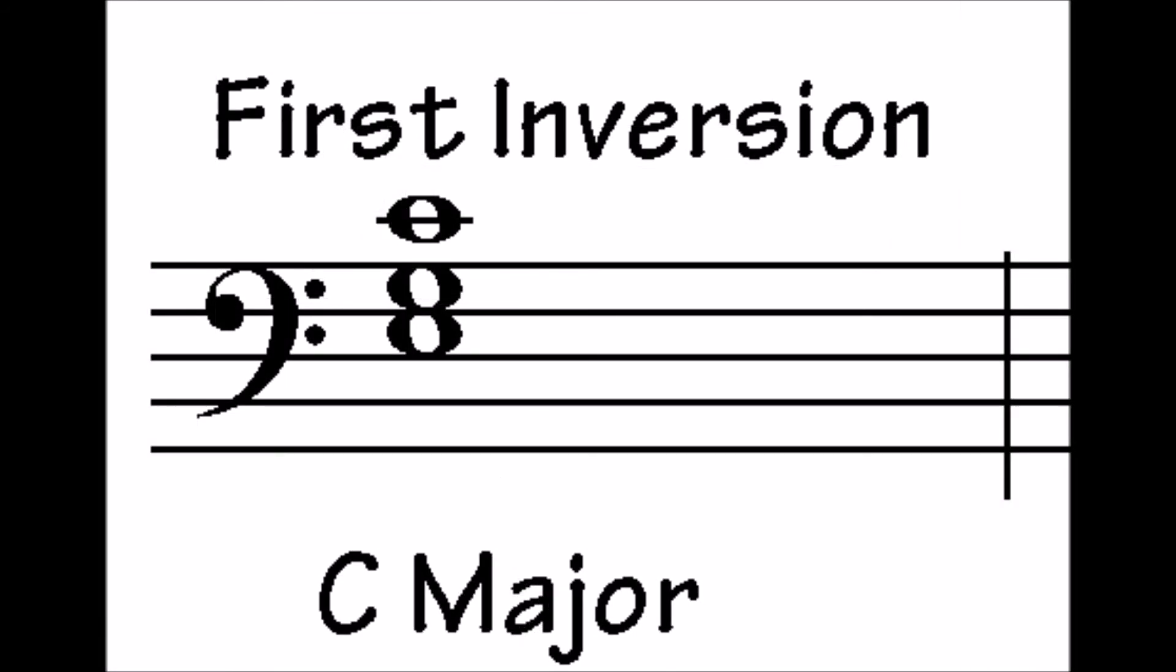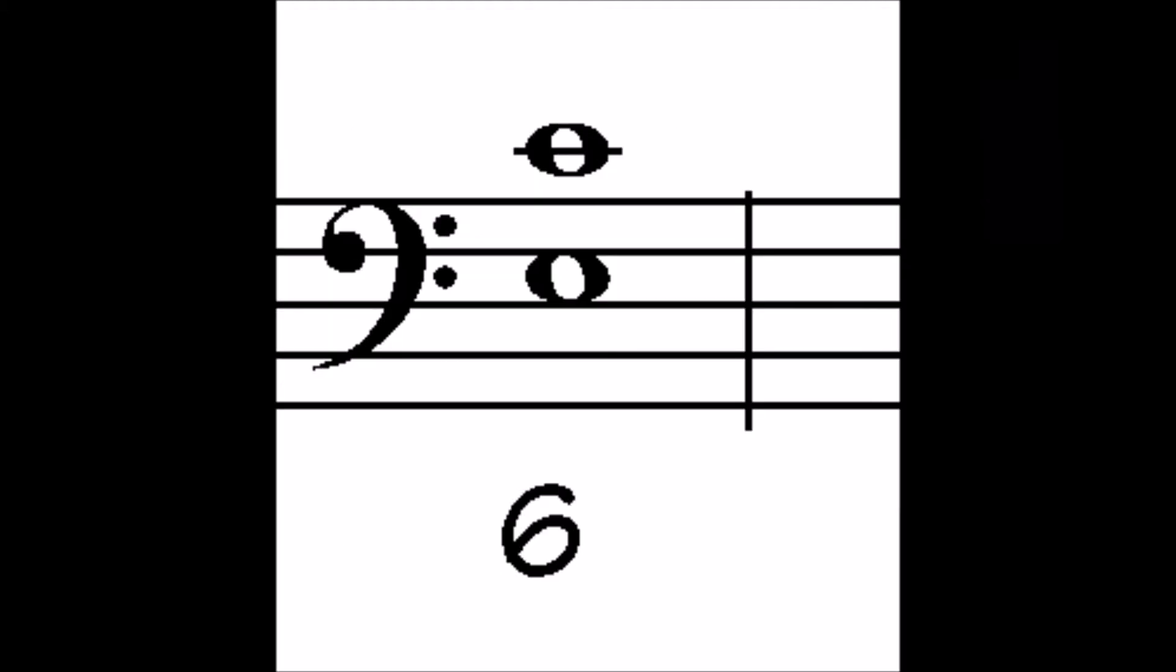Now let's look at a first inversion C major triad. Here the third is in the bass. What is the interval the bass note makes with the top note, which happens to be the root of the triad? The interval of a sixth. We write six below the staff.